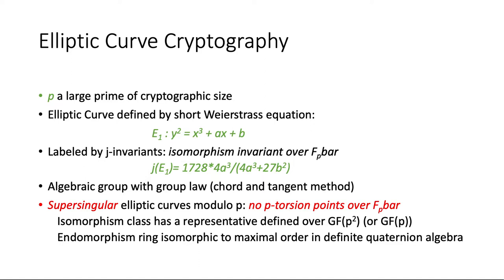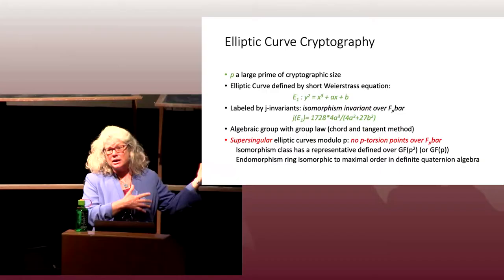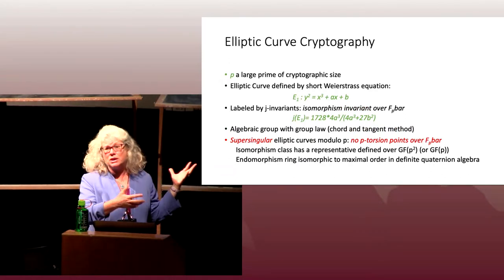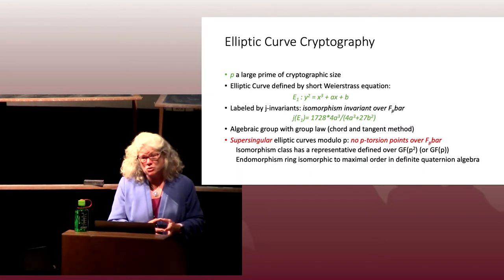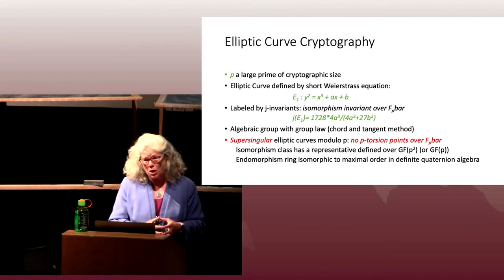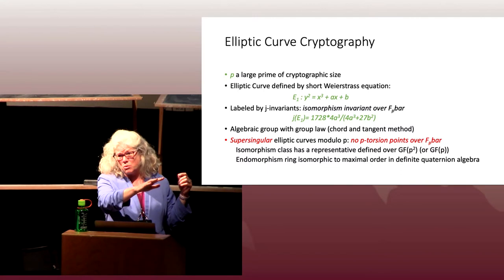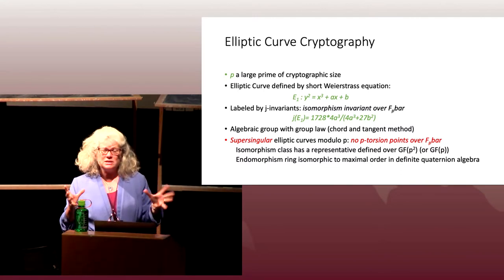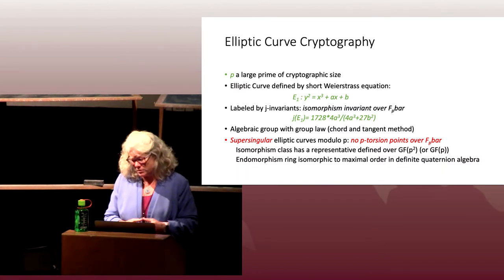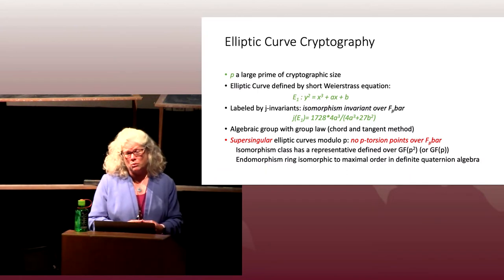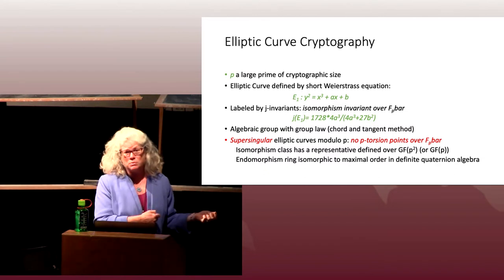You can think of the J-invariant as a modular form evaluated on an algebraic integer corresponding to the elliptic curve through CM theory, but I'm not going to talk about that subject here. The important thing about elliptic curves in cryptography is they have both geometric structure — being defined by an equation as a curve in the plane — and an algebraic structure defined by the chord and tangent method for computing the group law. If you want to add two points on an elliptic curve, you take a line, pass it through those two points, and look for the third point of intersection.